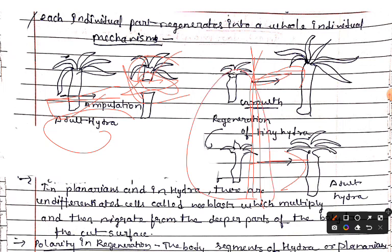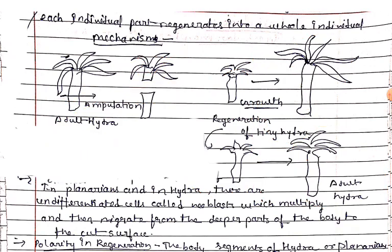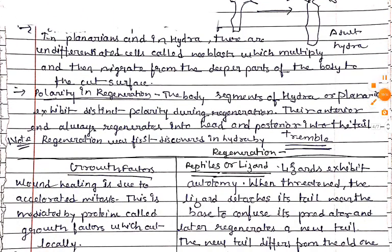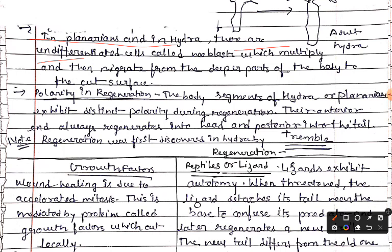Each fragment regenerates into a new adult hydra, so all the fragments become new organisms. In planaria and hydra, there are undifferentiated cells called neoblasts which multiply and then migrate from the deeper parts of the body to the cut surface to bring about regeneration.